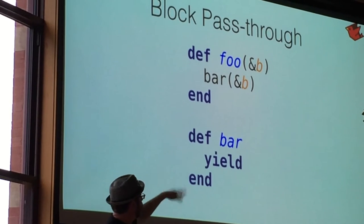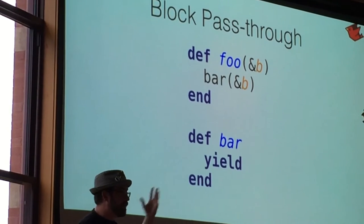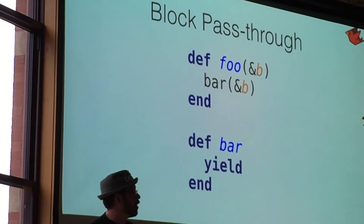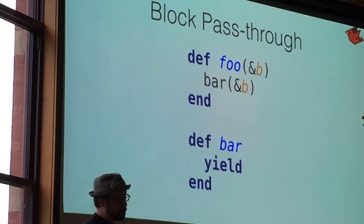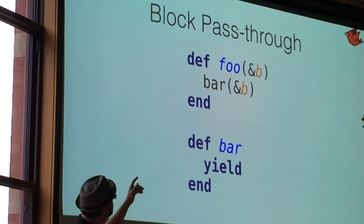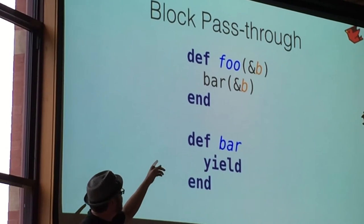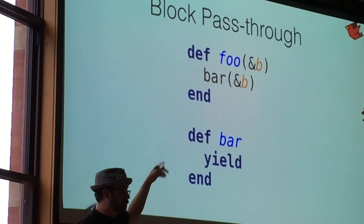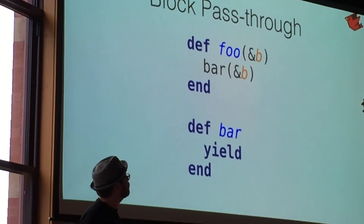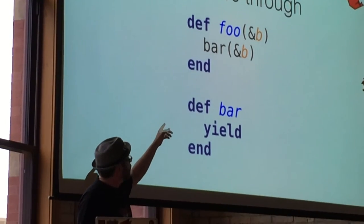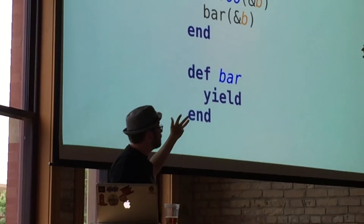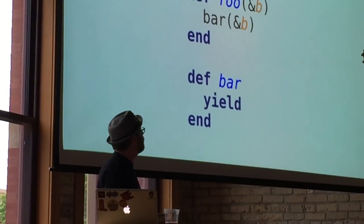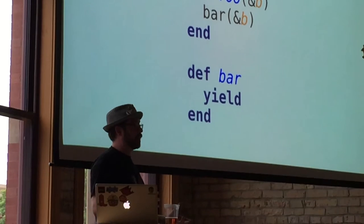And then basically just unwrap it to send it through as the block for the next call. And then down to your bar. So essentially I don't need this block, but I want some function I'm calling it to use it. So on CRuby, this actually has a significant cost. It doesn't seem like it should. You're just passing the block through. But turning it into an object — the ampersand V at the top, through ampersand V — has to create an object to hold the block.